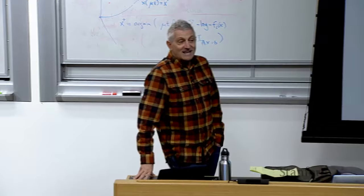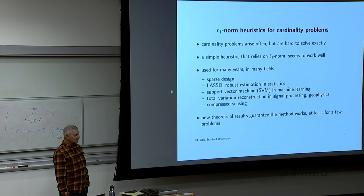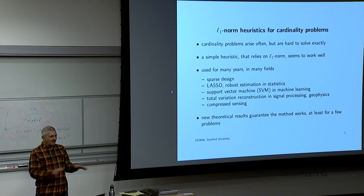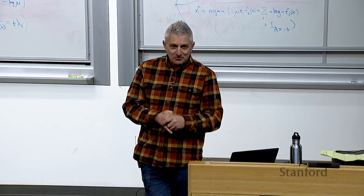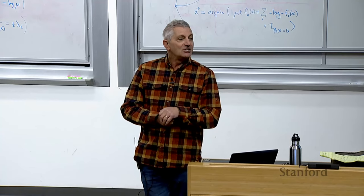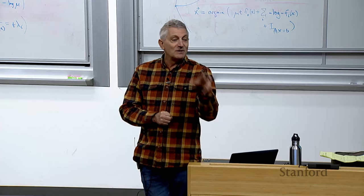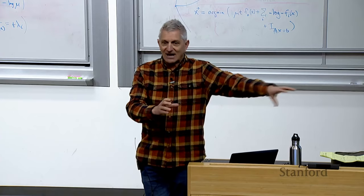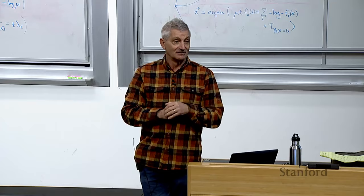Another example is FIR filter design: coefficients can be negative so you use a true L1 norm. Enforcing sparsity in the coefficients means zero-coefficient blocks require no hardware at all — multiplying by zero and adding to a result is simply no circuit. This application was used in circuit design for decades.